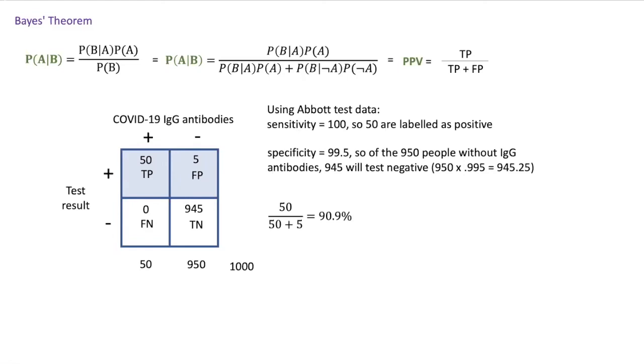So if the patient's IgG antibody test is positive, there's a 91% chance that he does have COVID-19 IgG antibodies.